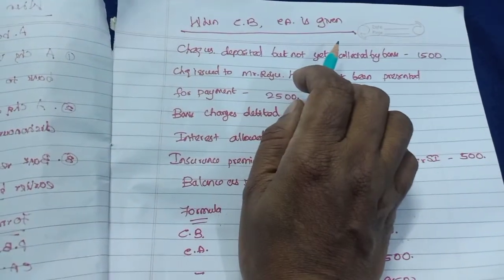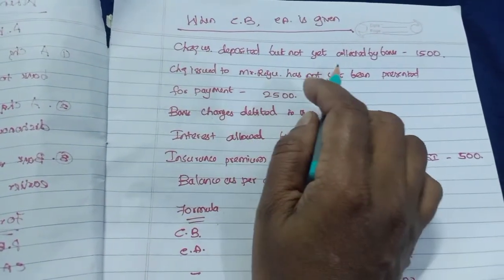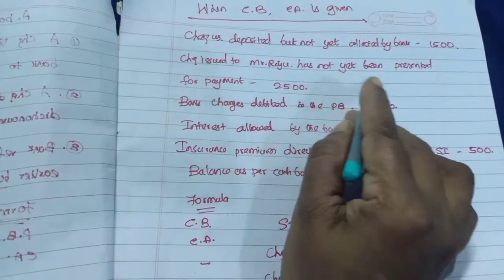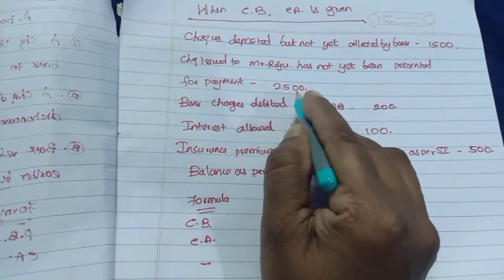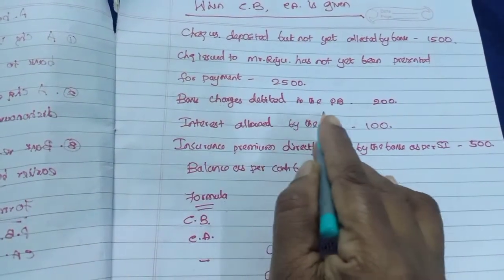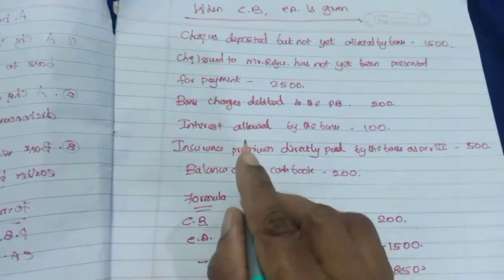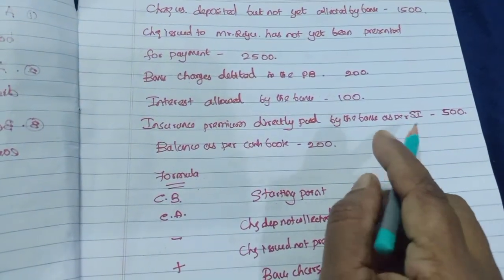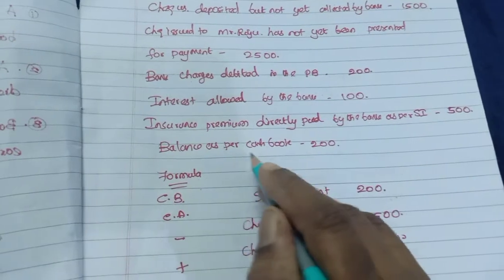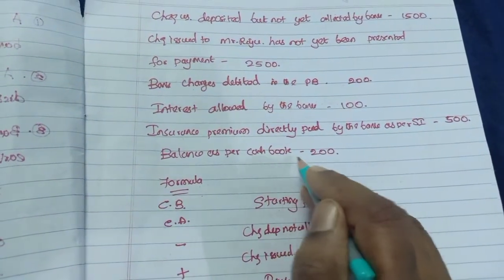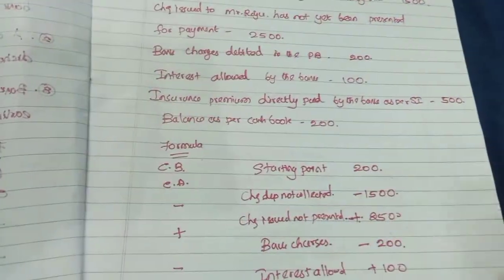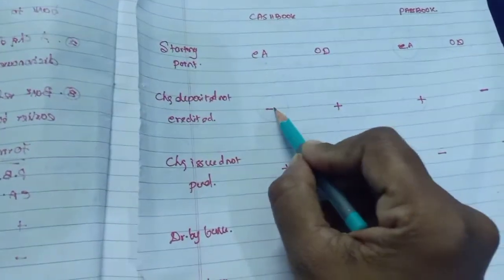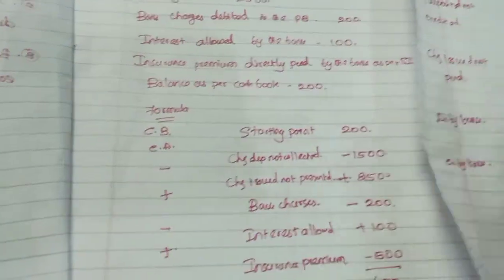The second problem is when cashbook current account balance is given. The particulars are: checks deposited but not collected by the bank — Rs. 1,500; check issued to Mr. Roger not presented for payment — Rs. 2,500; bank charges debited in the passbook — Rs. 200; interest allowed by the bank — Rs. 100; insurance premium directly paid by the bank as per standing instructions — Rs. 500. Balance as per cashbook is Rs. 200. Since cashbook current account balance is given, the formula is minus, plus, minus, plus.